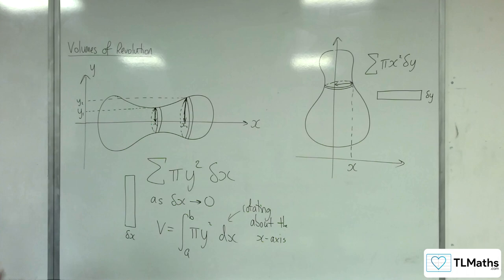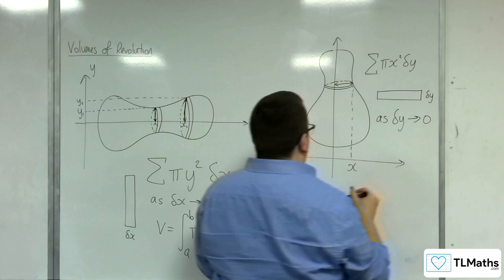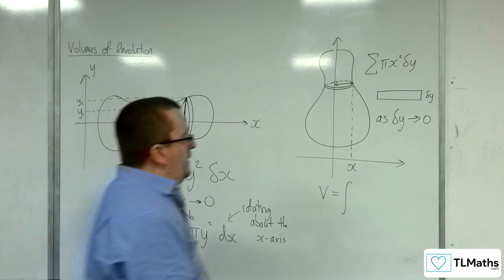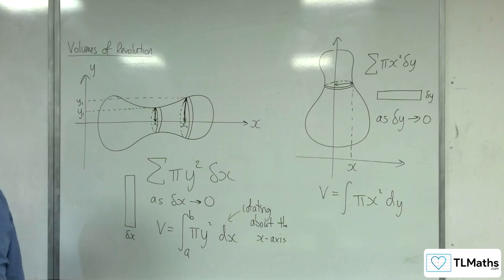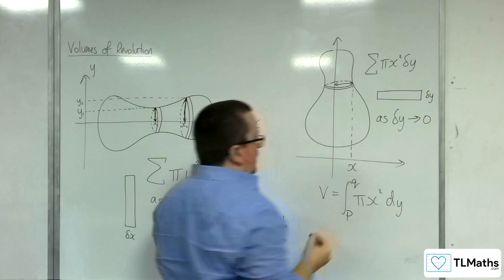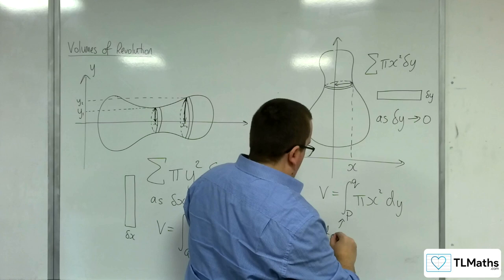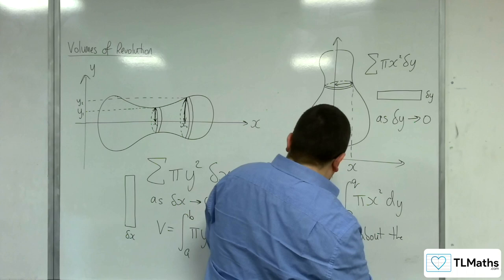So, as delta y tends to 0, the volume will become the integral of pi x squared dy. And if I had it between p and q, for example, then this would be my integral. And this would be rotating about the y-axis.